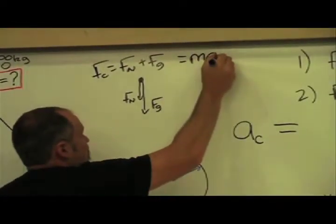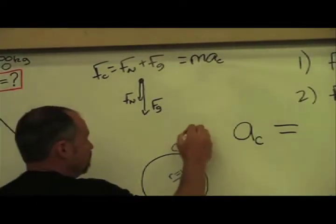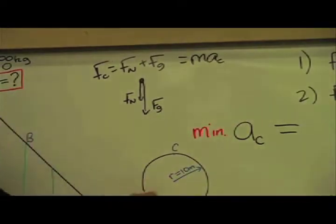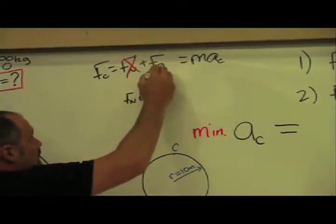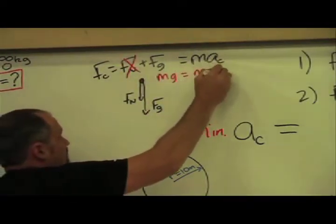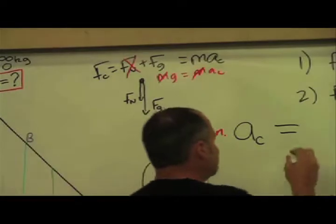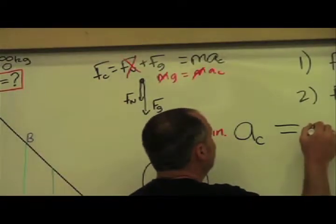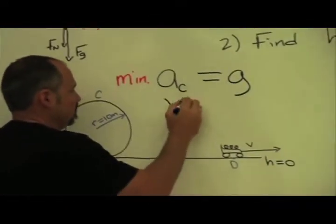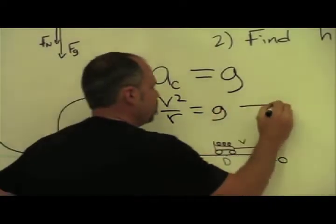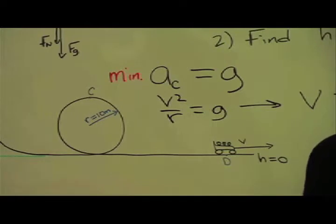These two combined equal the mass times the centripetal acceleration. To find the minimum centripetal acceleration, you would go slow enough so that you're not pushing up against the rails and you don't have the normal force. Then this is mg equals mac, and you see that the m's cancel. So the minimum centripetal acceleration to make the loop has to equal gravity.